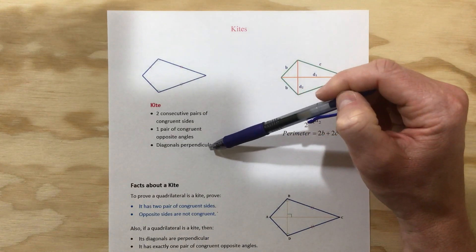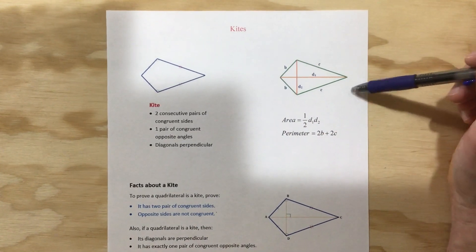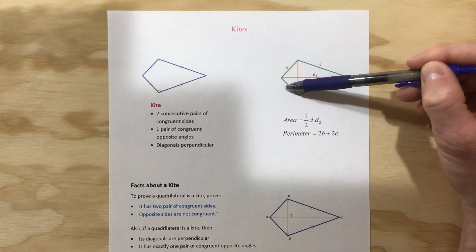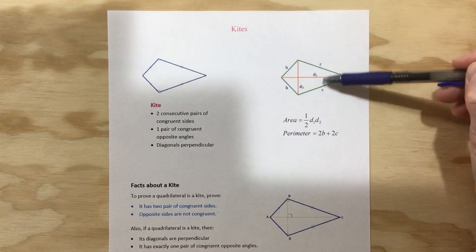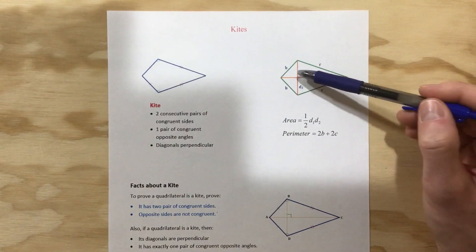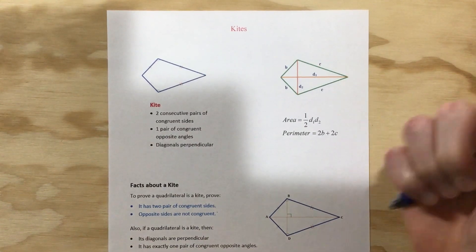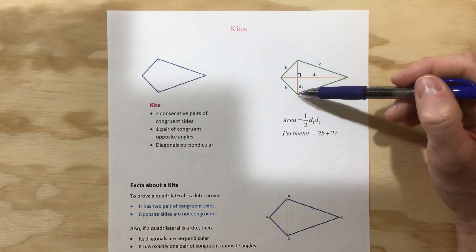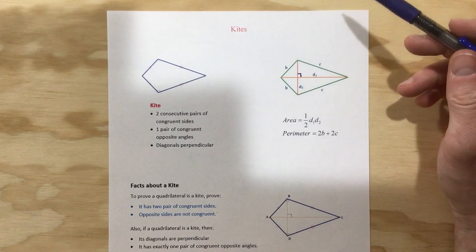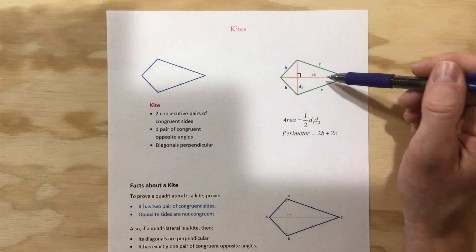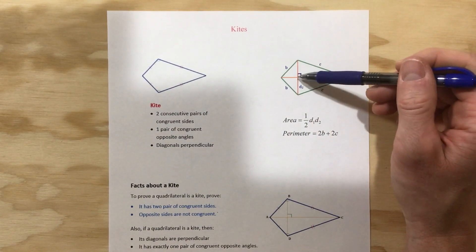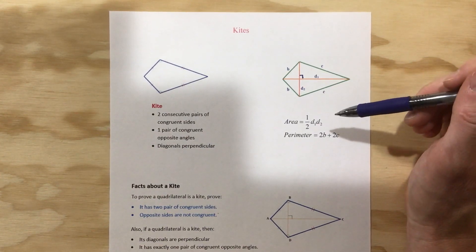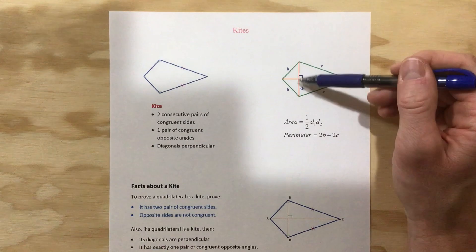We also know that the diagonals are perpendicular. Looking at the labeled diagram, these two sides are both length B — they're congruent — and these are both length C — they're congruent. The diagonals are perpendicular, so there's a right angle there. The diagonals are D1 and D2; they are not the same length. D1 does actually bisect diagonal D2, but D1 itself is not split in half — only D2 is split into half.